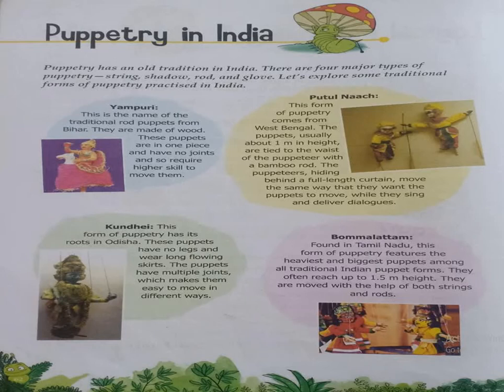The very first one is Yampuri — this is the name of the traditional rod puppets from Bihar. These puppets use rods instead of strings. They are made of wood, have one single piece with no joints. Because there is no flexibility, a special type of skill is required to move them. Only specialized people who know how to use these puppets can perform with them.